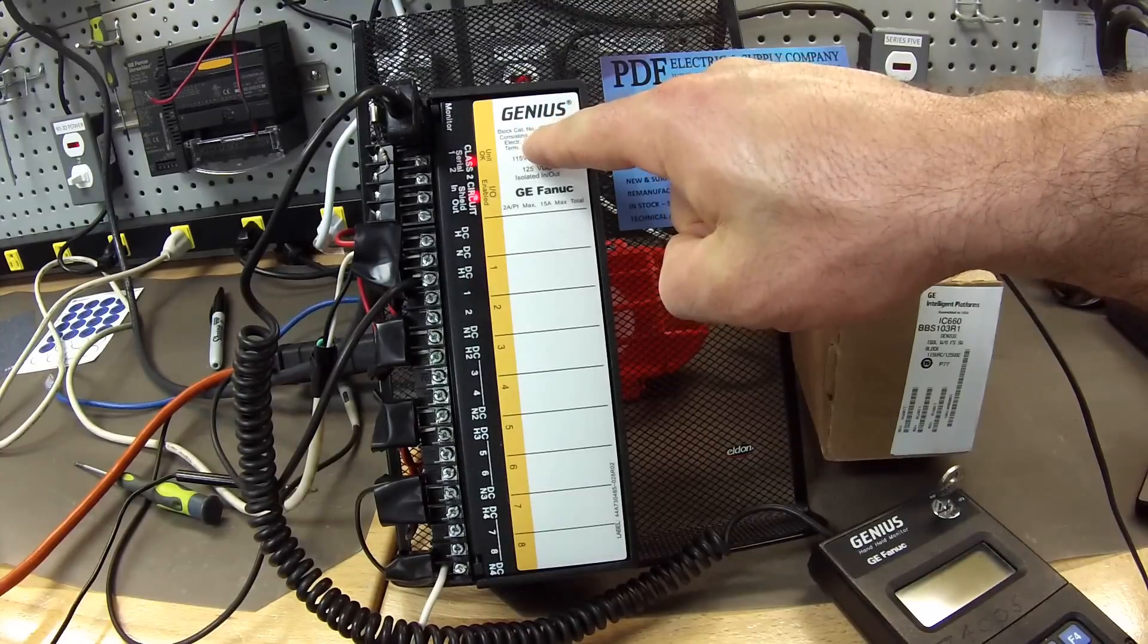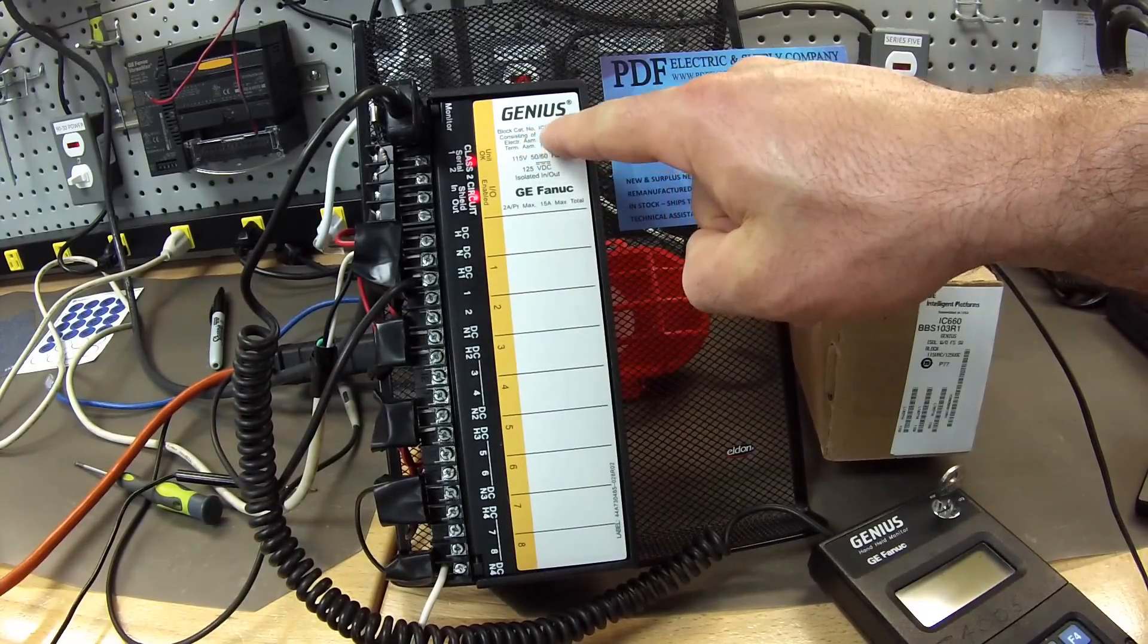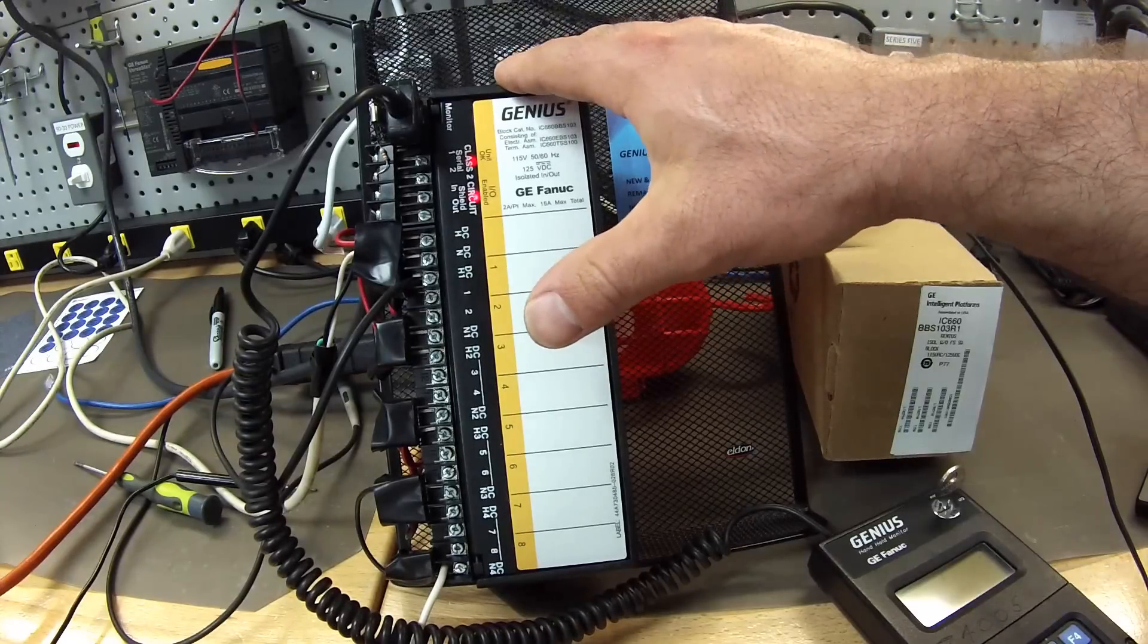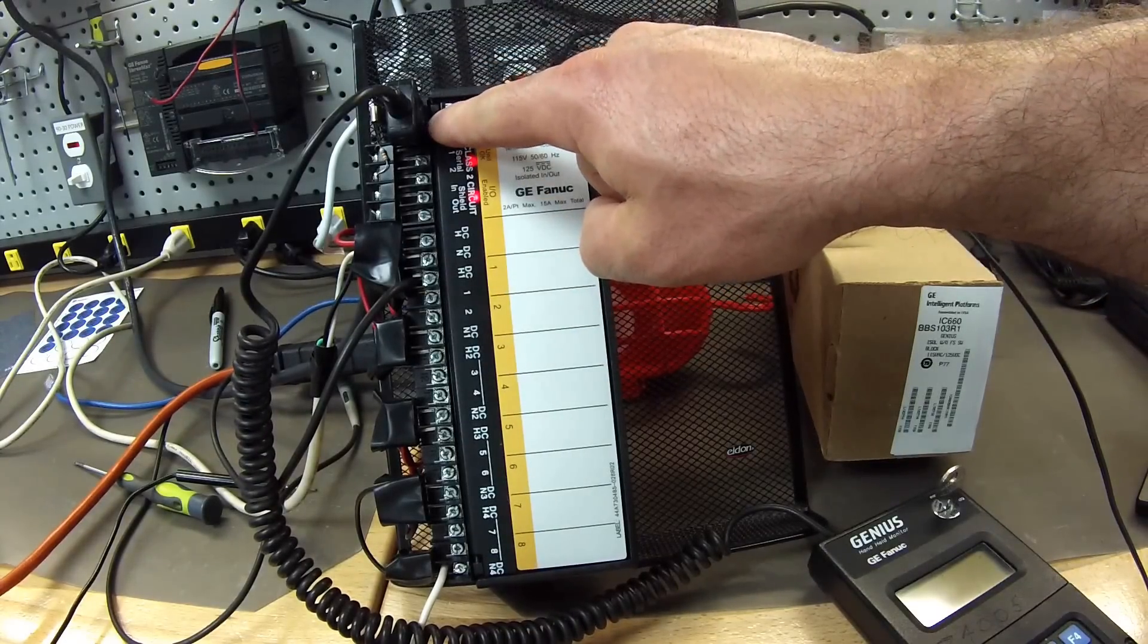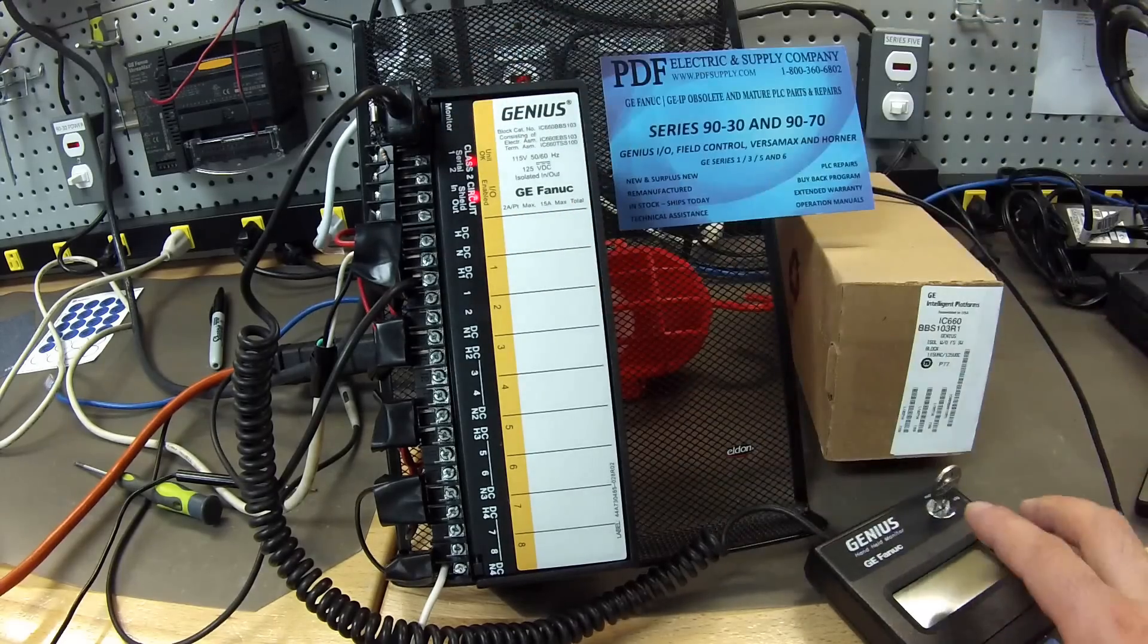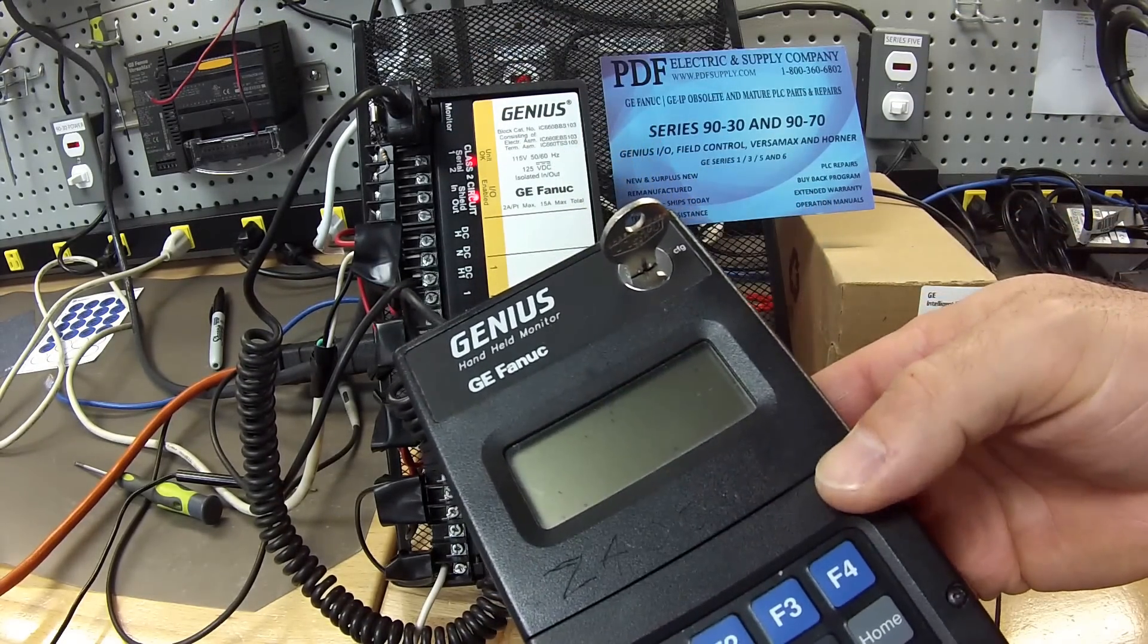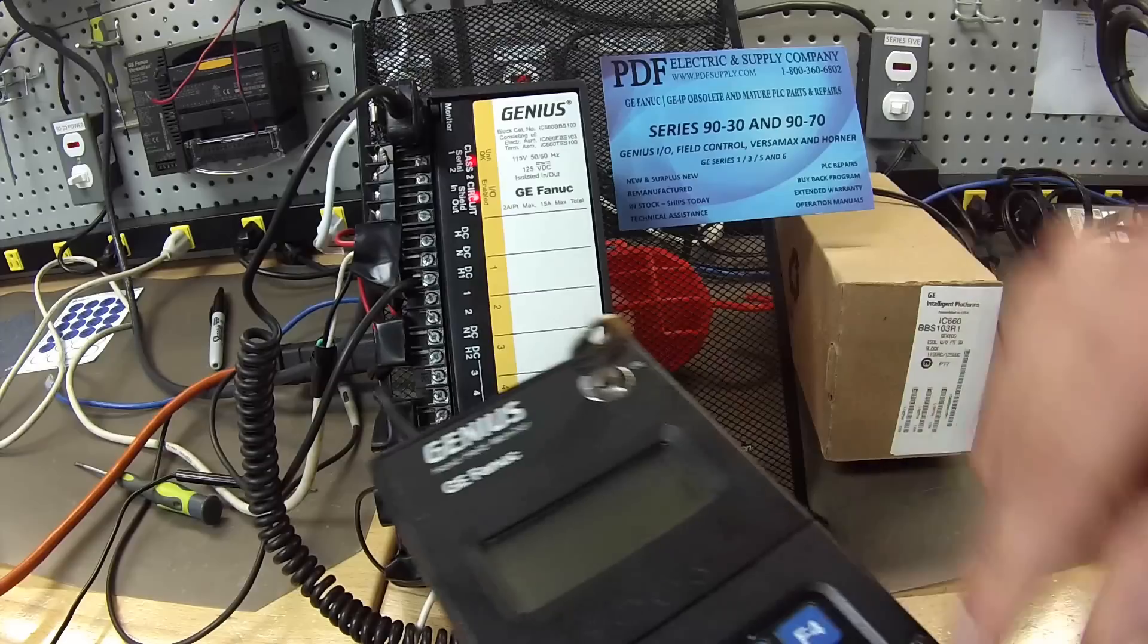I have here part number IC660BBS103. Part of what we're going to do for this test is we're going to test that the handheld monitor is able to program the block through this port. That's an IC660HHM501 handheld monitor.